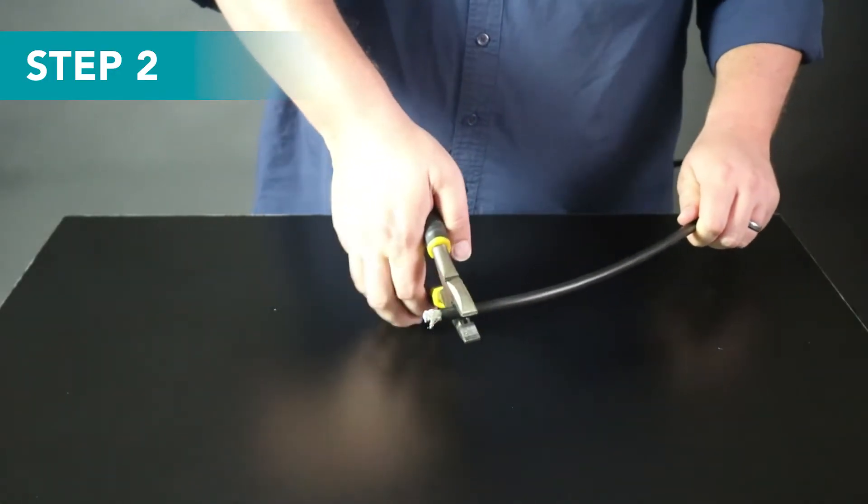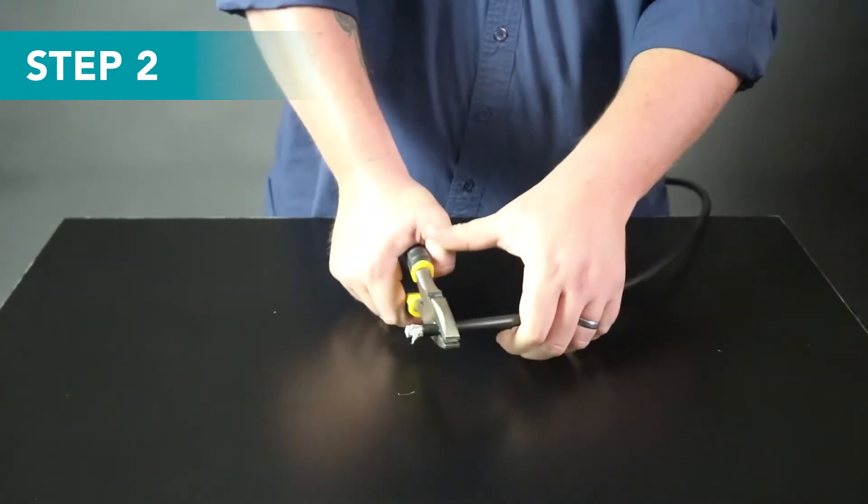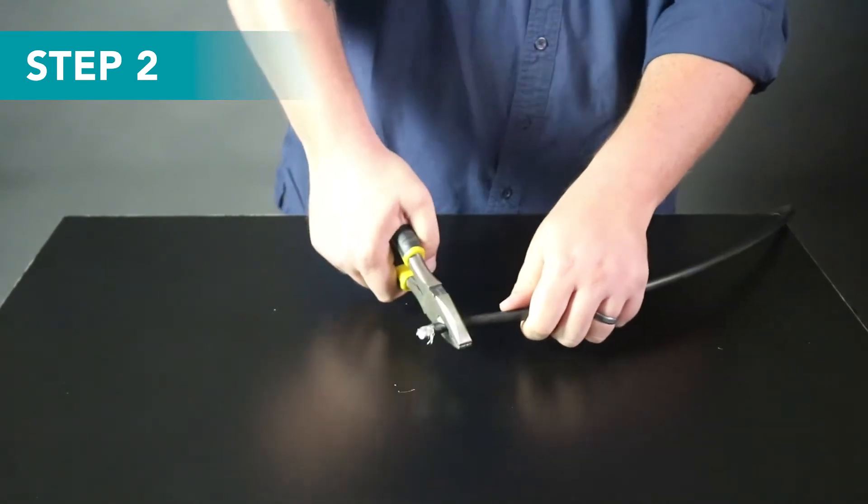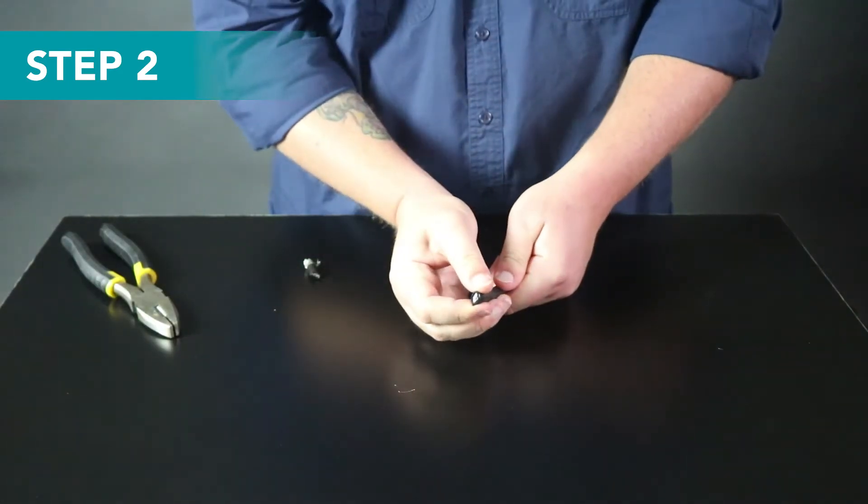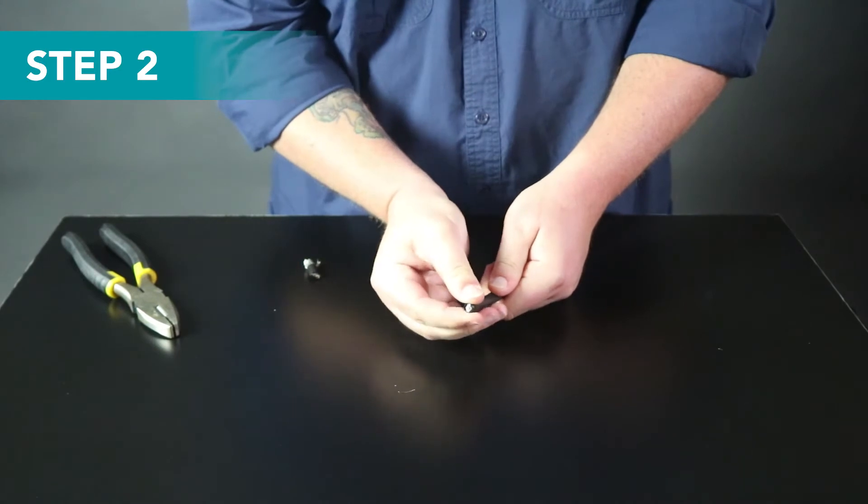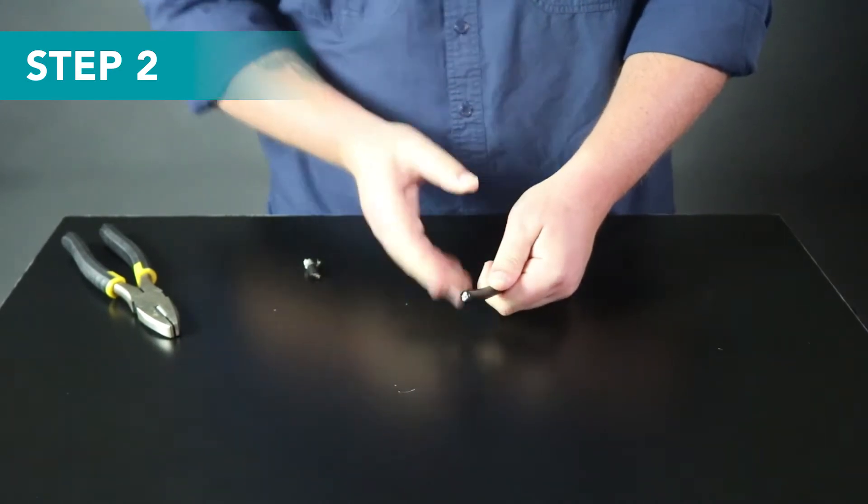Step two, cut the cable so that the end is straight. You may need to squish the end of the cable a little bit after this step to make it circular again. Sometimes the cutting process can flatten the cable and you'll want to make sure that it's nice and round for the next steps.